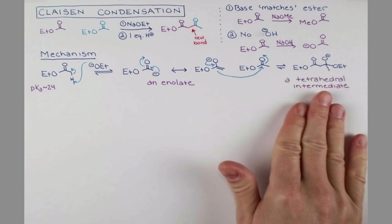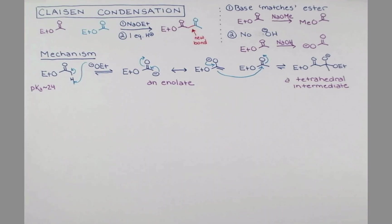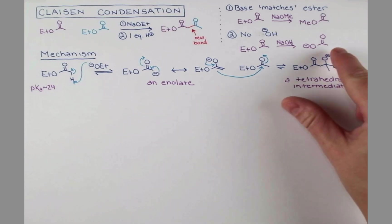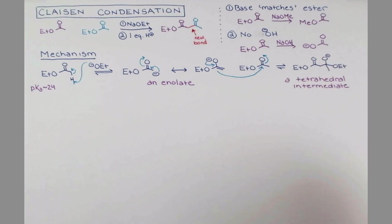Tetrahedral intermediates are intermediates. They are not stable. So what's going to happen is this negative charge on oxygen is going to push back down, kicking out OET- as a leaving group. Now ethoxide is not a good leaving group in SN1 and SN2 reactions.